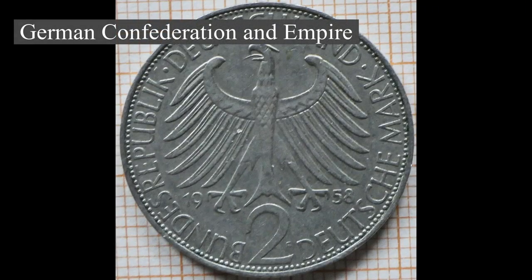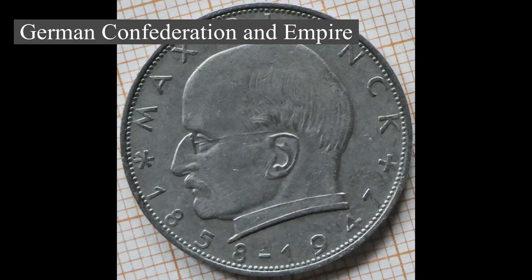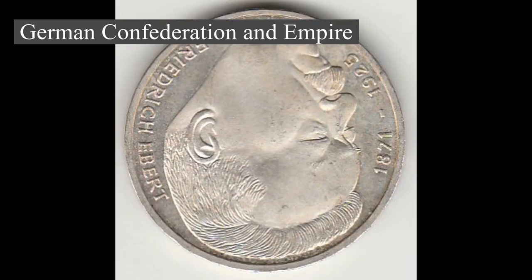German Confederation and Empire: Following the fall of Napoleon, the Congress of Vienna founded the German Confederation, a loose league of 39 sovereign states. The appointment of the Emperor of Austria as the permanent president reflected the Congress's rejection of Prussia's rising influence. Disagreement within restoration politics partly led to the rise of liberal movements, followed by new measures of repression by Austrian statesman Clemens von Metternich. The Zollverein, a tariff union, furthered economic unity. In light of revolutionary movements in Europe, intellectuals and commoners started the revolutions of 1848 in the German states, raising the German question.